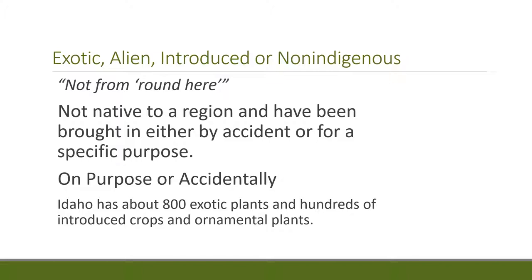Exotic, alien, introduced, or non-indigenous are terms that all mean roughly the same thing: they're not from around here. When we talk about plants that are not native, we usually mean not native to North America, but they could also be not native to a specific region like the Pacific Northwest or a specific state like Idaho. They were brought here either accidentally, on purpose, or for a specific purpose. In Idaho there are 800 exotic plants, and hundreds were introduced as crops or ornamental plants.